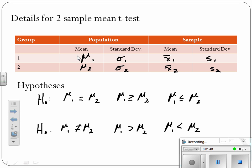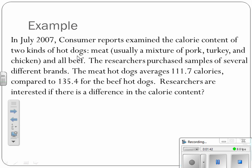Instead of comparing one population to a given number, we're going to compare one population to another. So let's take a look at one example here in July 2007. There's this consumer reports on two kinds of hot dogs, a meat hot dog and an all beef hot dog. So the researchers got several different brands and they found the average calorie count for meat was 111.7 compared to 135.4 for the beef. So they're interested, is there a difference?